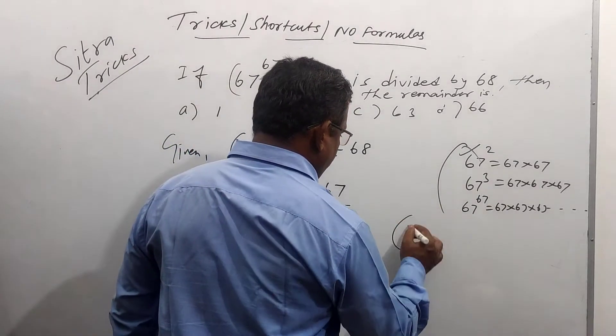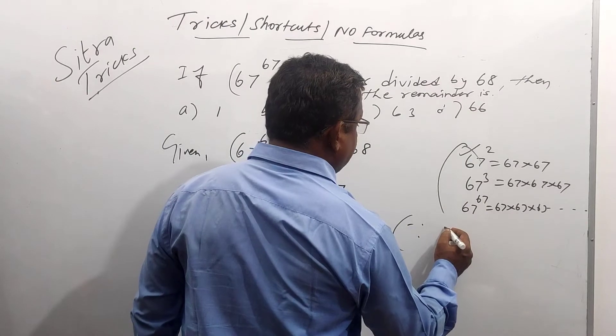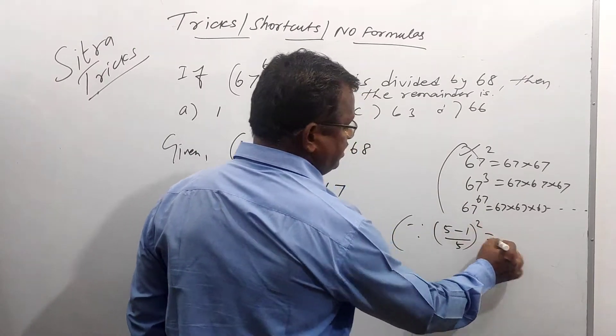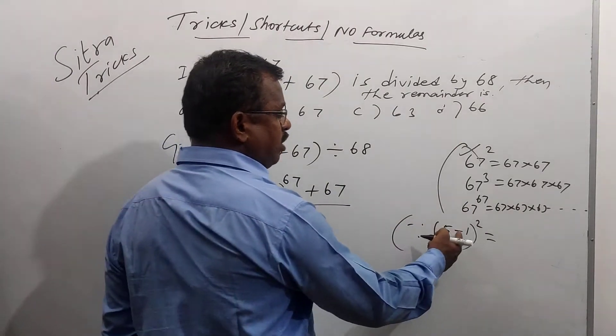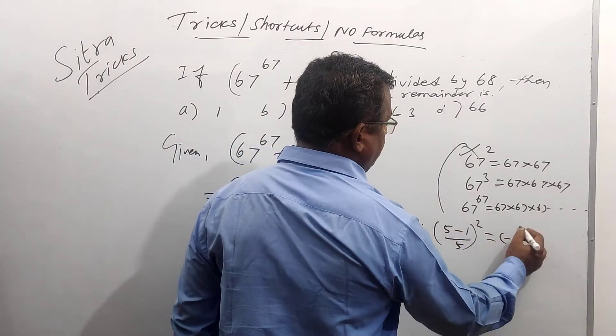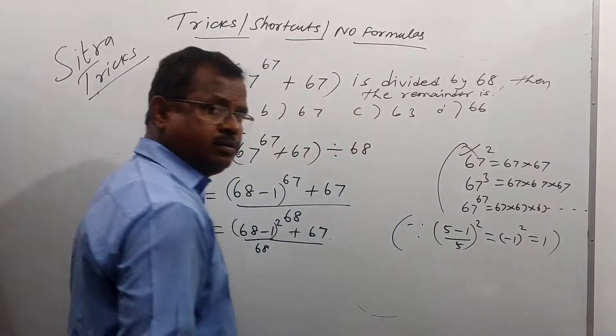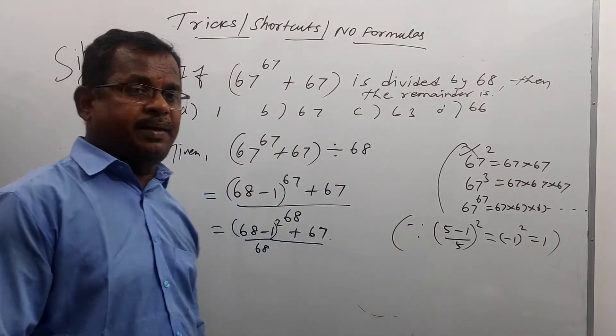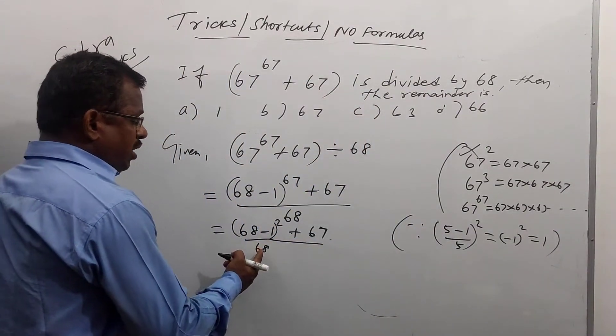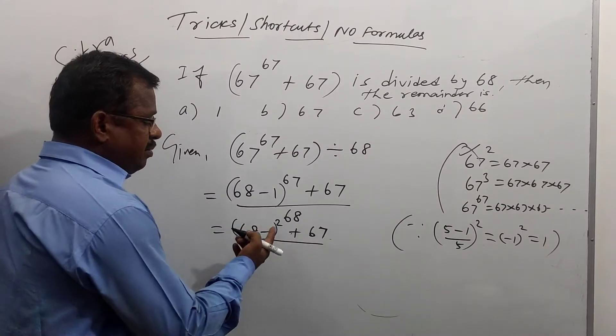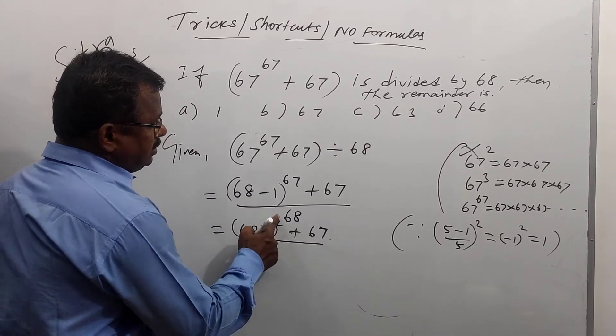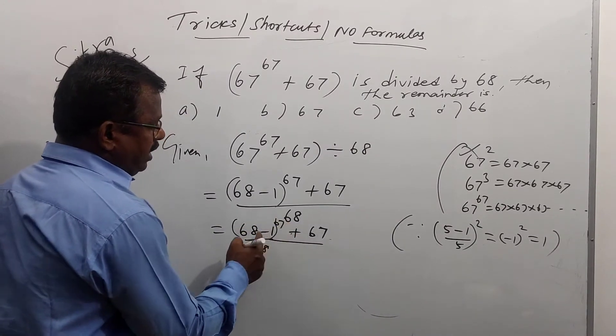Here, you should know 5 minus 1 by 5, the whole square means 5 into 5 is cancelled. Remainder is how much? Minus 1. Minus 1 the whole square equal to 1. You should know this type. So, we can solve 68 by 68 will cancel. Remainder how much? Minus 1 is remainder.